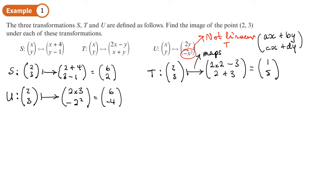Checking which transformations are linear: for T, there are no squares in it, so it looks promising. The other check is: if I start with (0, 0), do I end up at (0, 0)? Substituting x = 0, y = 0: the top gives 2×0 − 0 = 0, and the bottom gives 0 + 0 = 0. So T is a linear transformation because the point (0, 0) maps to itself.